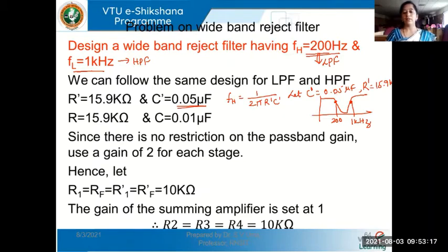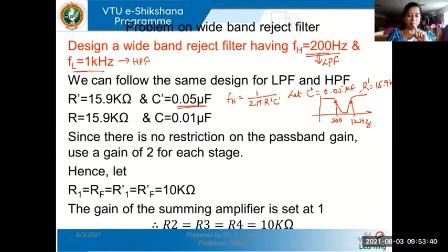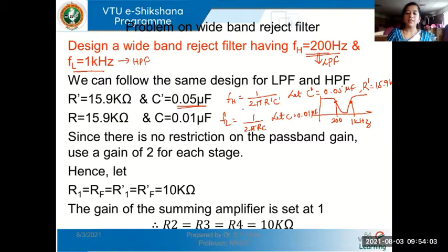You can assume any C' value less than 1 µF and compute R' accordingly. For the high pass filter: FL = 1/(2πRC). Choosing C = 0.01 µF and FL = 1 kHz, R also turns out to be 15.9 kΩ. We have taken different capacitor values to arrive at a common resistor. This completes the design of the high pass and low pass RC sections.